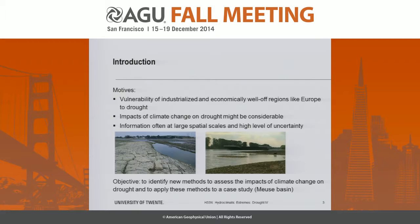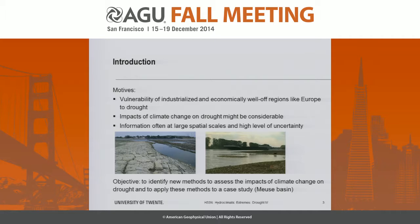As motivation for this study, there were some large drought events in recent years in Europe, and those events showed that even economically well-off and industrialized regions can be very vulnerable to drought. It is expected that because of climatic changes, these impacts will only become higher in the future. So it is important to have information on these impacts, on the impacts of climate change on drought, preferably at small and detailed spatial scales.